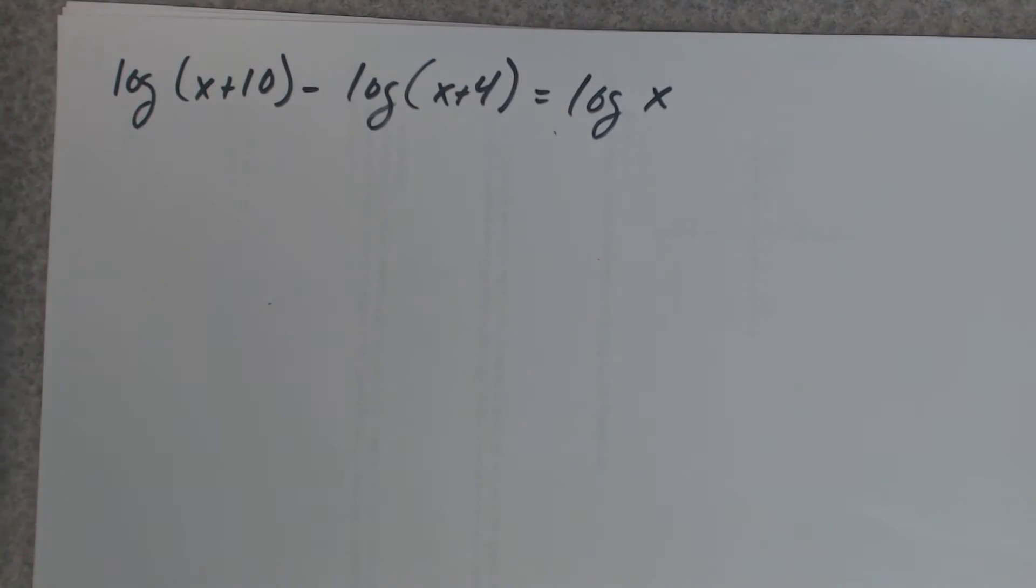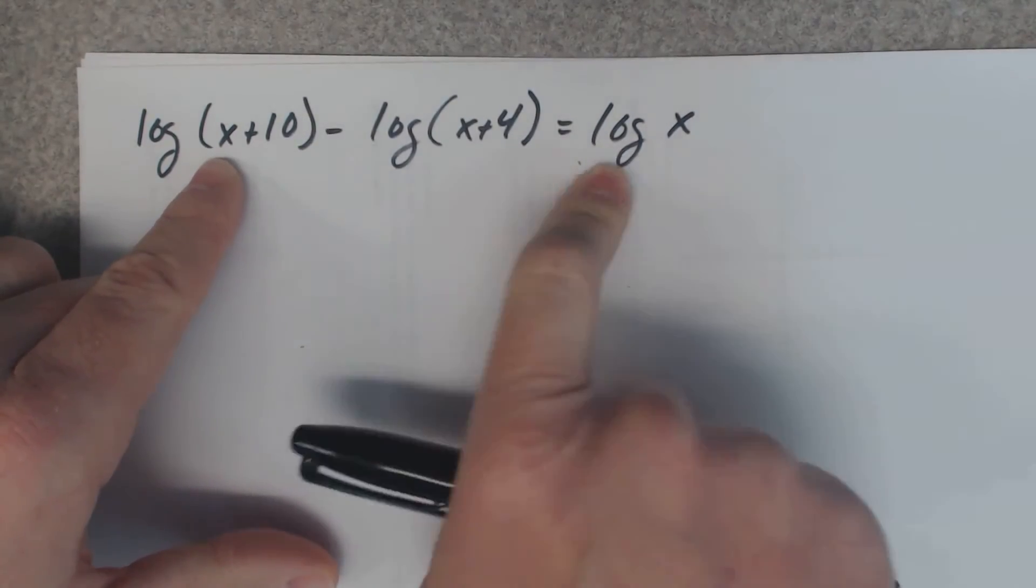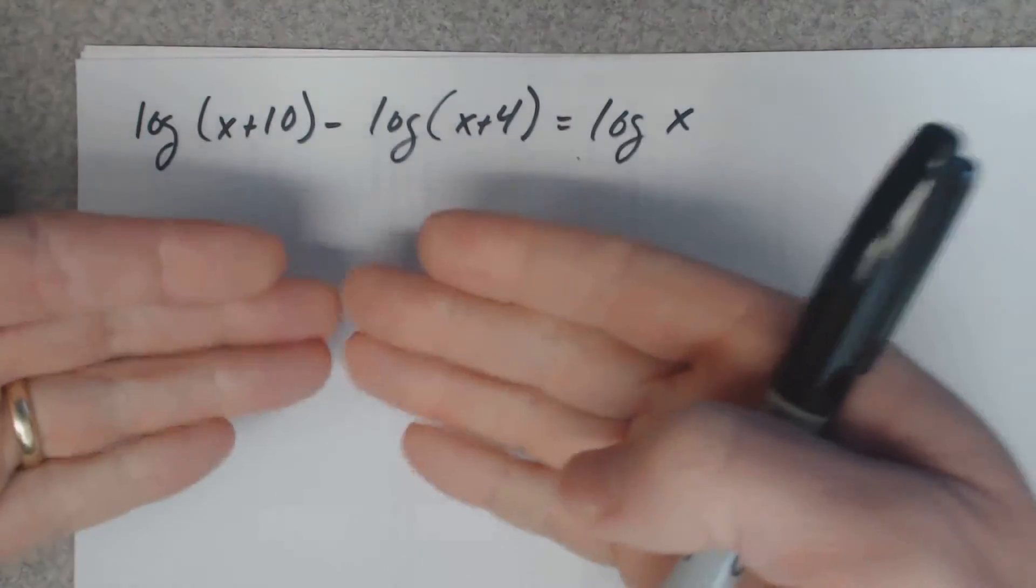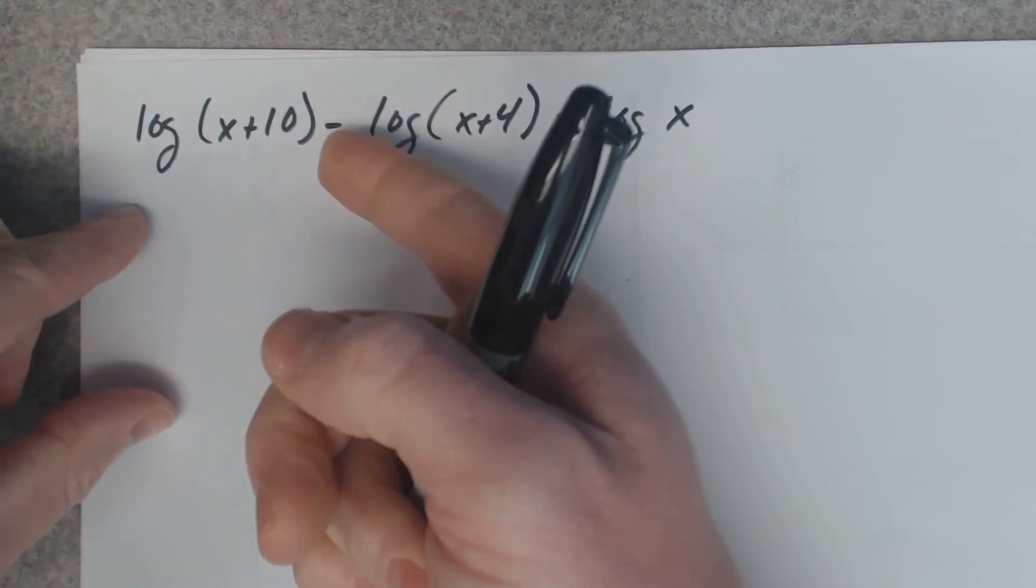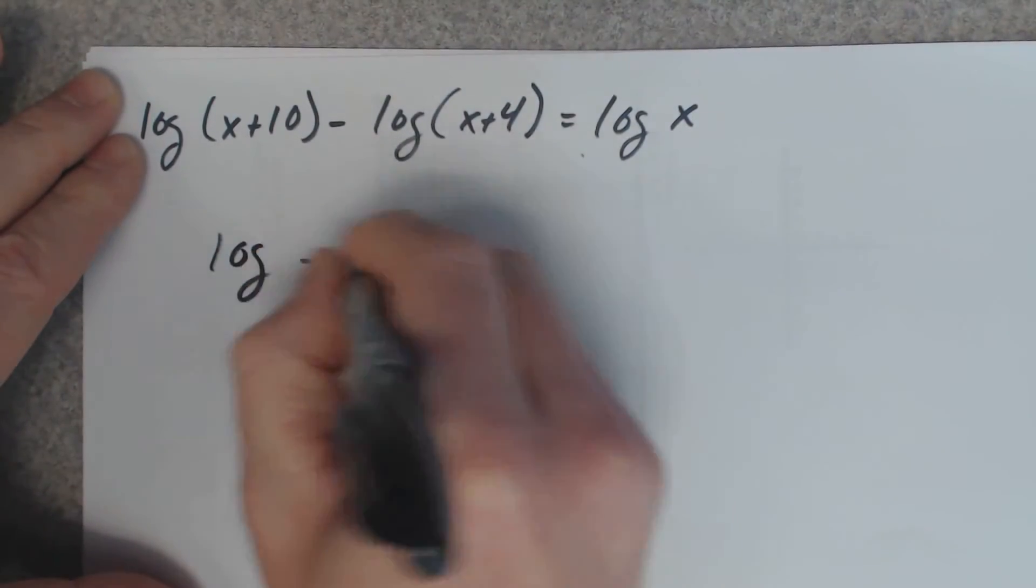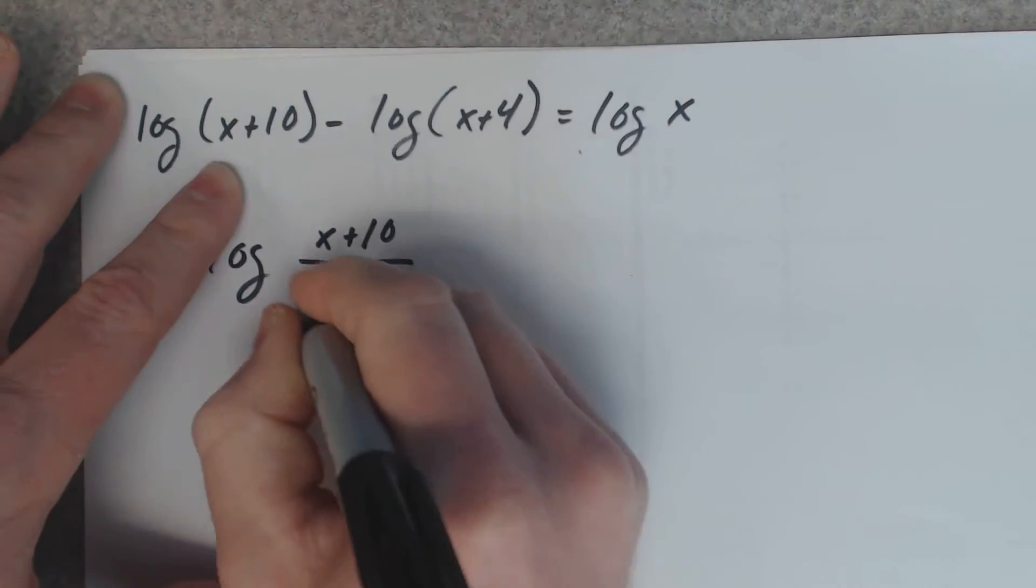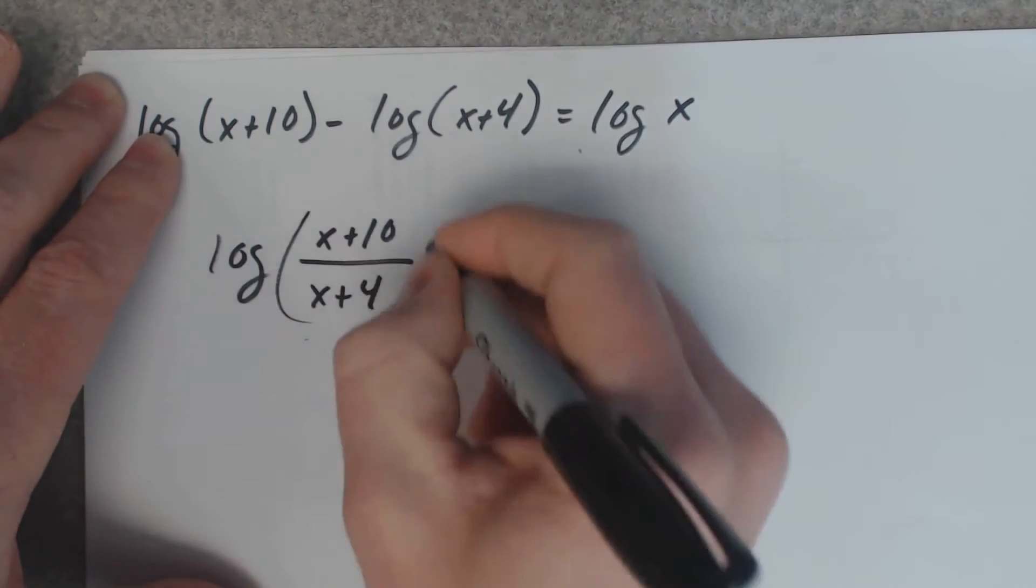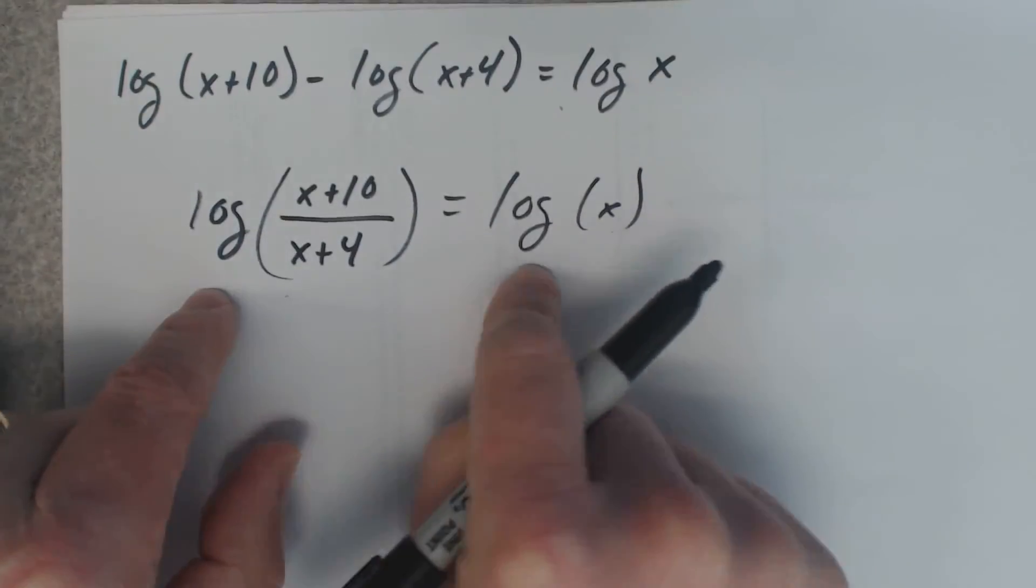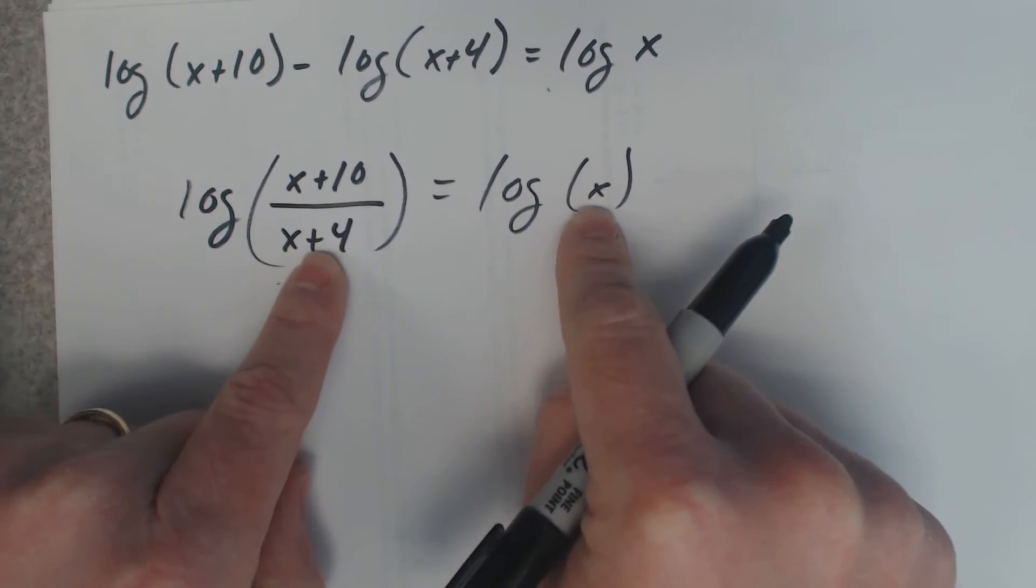So here we've got another question. We want to get, condense this side over here to one log. I see a subtraction, which means I can condense it using division. That's on top. This is on the bottom. Now, they're both the same logarithms. When you have the same logs, you can just set what's inside here equal each other.